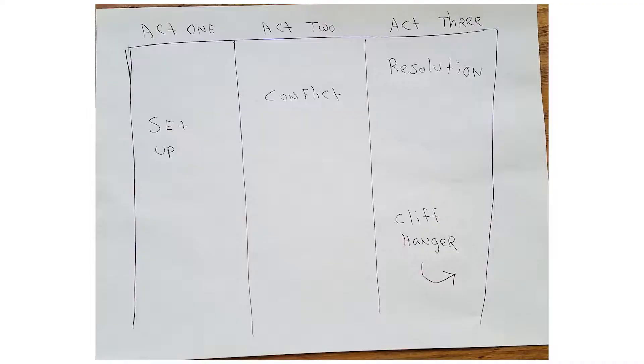So today we're going to take a look at that right now. It's broken into three parts — my little sheet right here. Act one, act two, act three. Act one being the setup — sets the story up. Act two being the conflict. Act three being the resolution, with also a cliffhanger leading to the next episode. So basically the acts are: the beginning, the middle, and the end of the story.